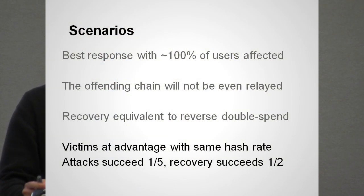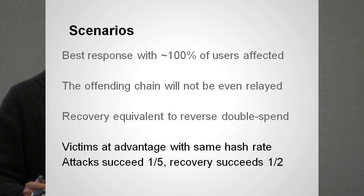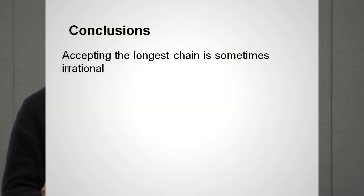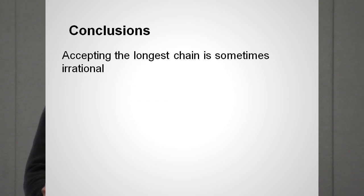For example, with one-third of total hash power, the attacker's success probability for a six-block attack is 20%. Victims possessing also one-third of the power and rewriting two blocks will succeed with a probability of 50%. So in conclusion, accepting the longest chain expects users to act sometimes in an altruistic manner, ignoring their own interest. Fortunately, it seems that the rational decision to reject chains which are in conflict with one's first-hand experience actually improves Bitcoin's resistance to some of the attacks.